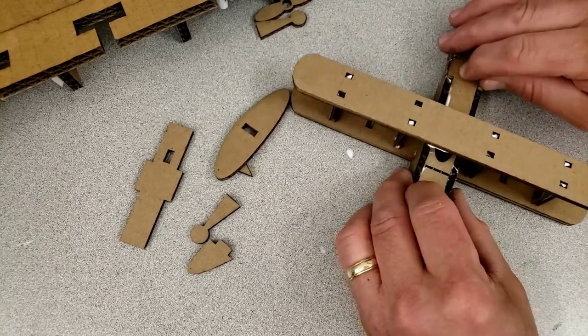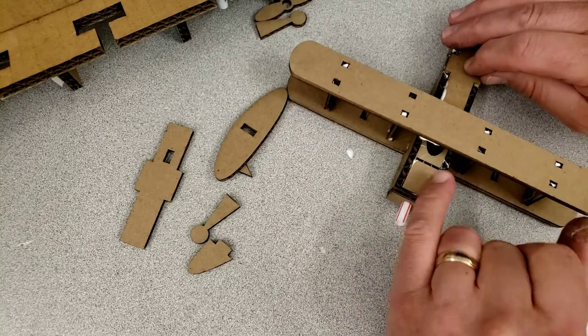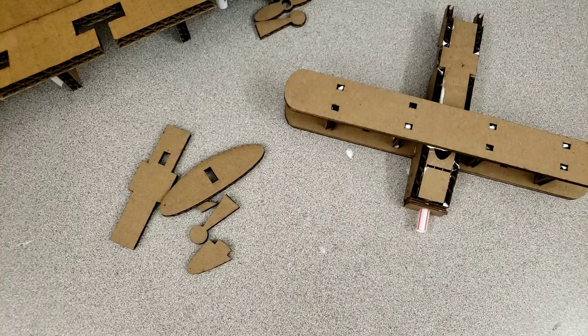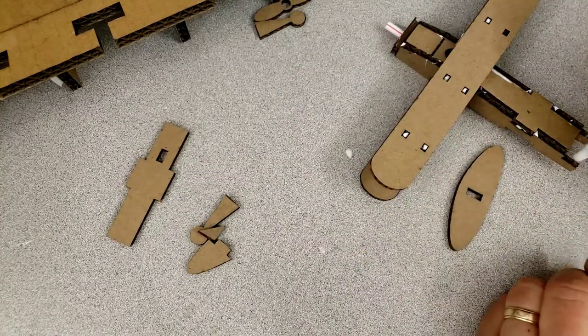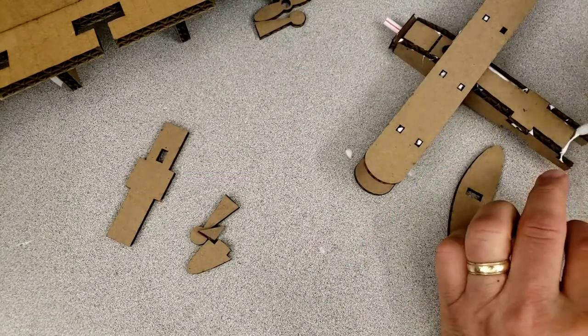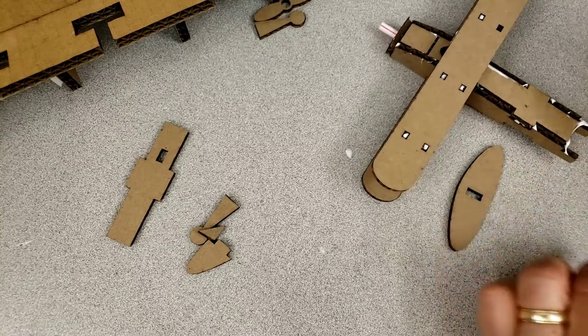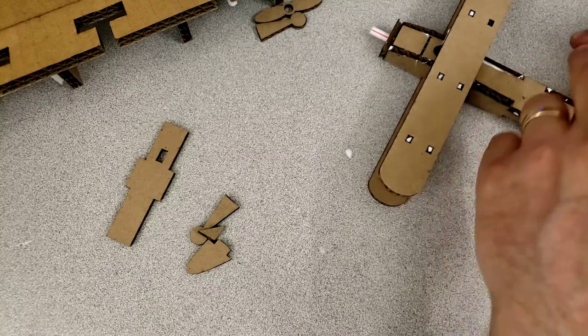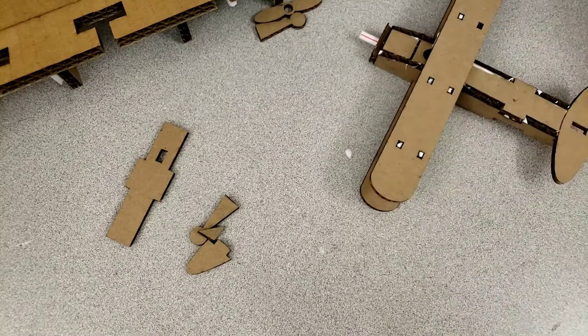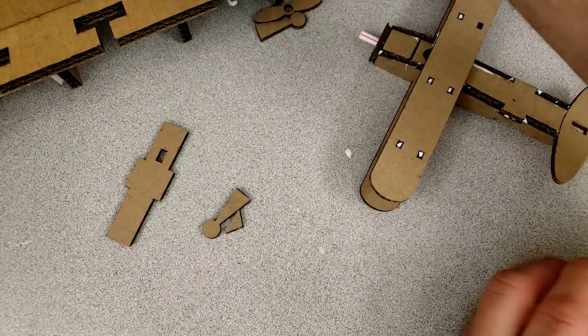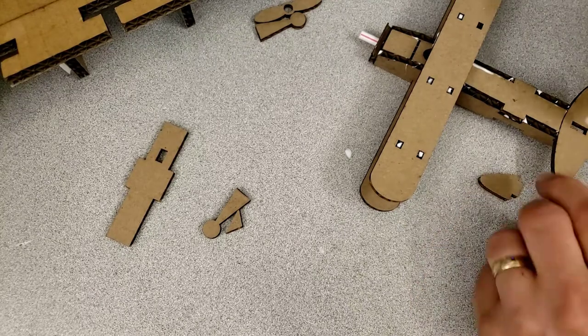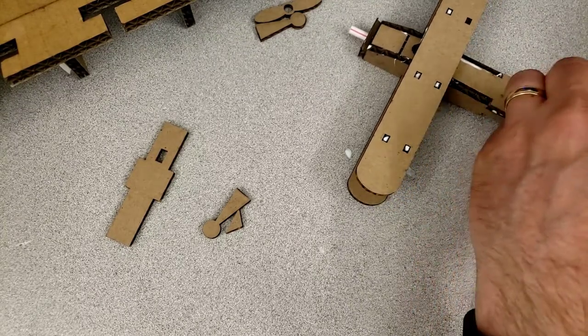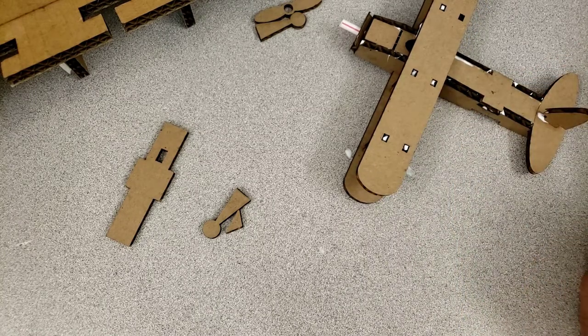Those are little one millimeter holes I cut. There's the fuselage. Let's glue on this horizontal stabilizer. Once again, just glue in that area. And then find your vertical stabilizer and it drops in place as well.